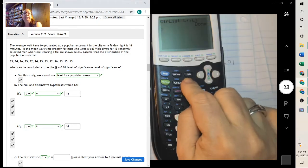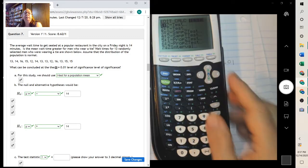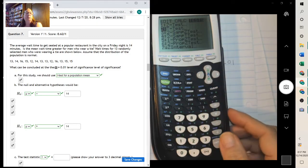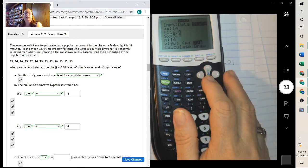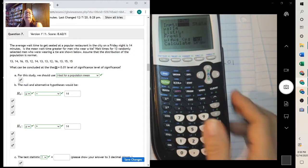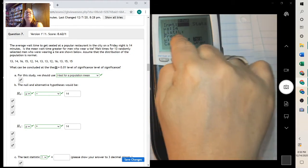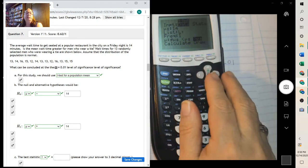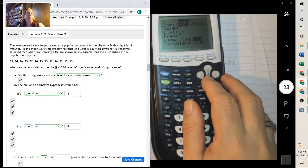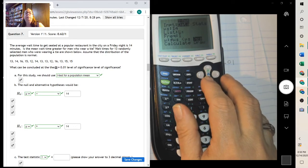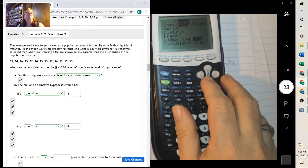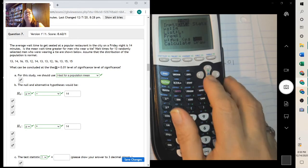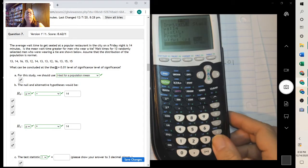So now when you go over to do the test, stat, test, and we want a t-test because it was small. You want to go over one to data. Notice how this changed. It put the list in there. So now we only have to put our hypothesis test, which was 14 again. So 14 is right. We put it in list one, leave frequency as one, and then we're testing greater than, which it's on greater than, and then calculate.